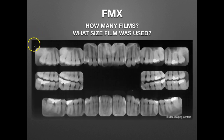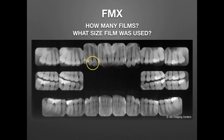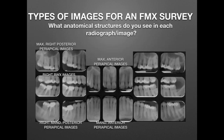Here's another FMX. How many films are in this FMX? If you said 20, right again. What size film was used? We covered this in a previous presentation — we have our number two film size, and then we have a smaller film for the anterior teeth, which is a number one size film. Let's look at the types of images in an FMX survey — specifically, what anatomical structures do you see in each image.